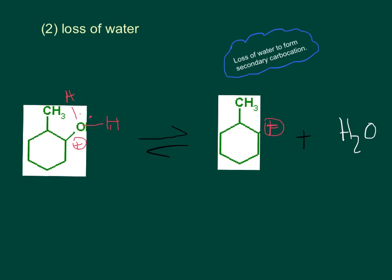In the second step of the mechanism, we are going to have the loss of water. Because this water has a charge, it's rather unstable, so this double bond here is going to go to the oxygen here, and thus we are going to form a secondary carbocation right here and water which contains two lone pairs - one that it had initially and then other lone pairs that were provided by the double bond.